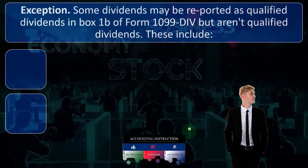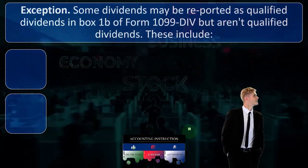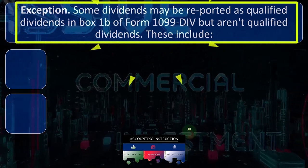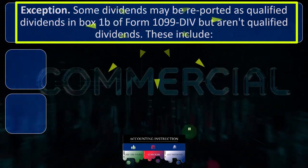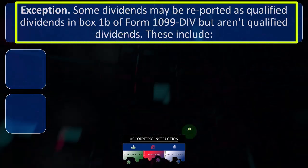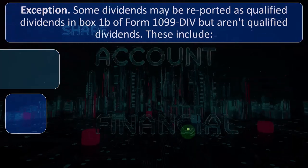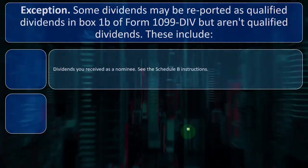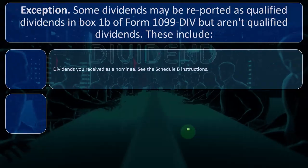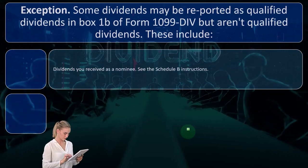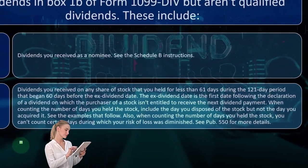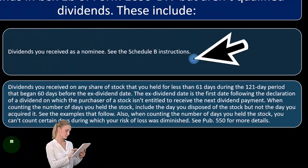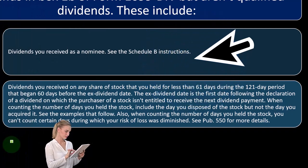Exception: some dividends may be reported as qualified dividends in box 1B of Form 1099-DIV, but aren't qualified dividends. These include dividends you received as a nominee. See Schedule B instructions. We took a look at a situation similar to that when we saw it for the interest.